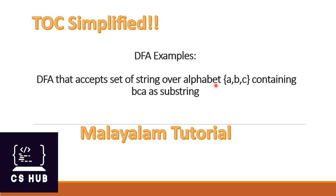We will discuss a DFA that accepts a set of strings over the alphabet {A, B, C} containing BCA as a substring. We will look at a similar problem: a set of strings over {0, 1} containing 101 as a substring. There are two alphabets in that case.